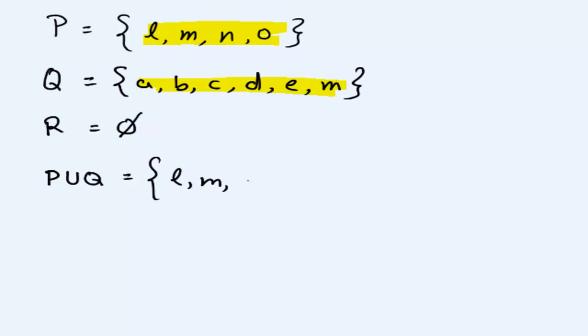So what appears in P and Q: L, M, N, O, A, B, C, D, E, and wait, we already said M. So M is already there.